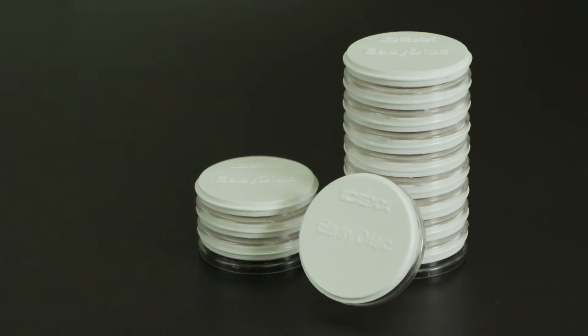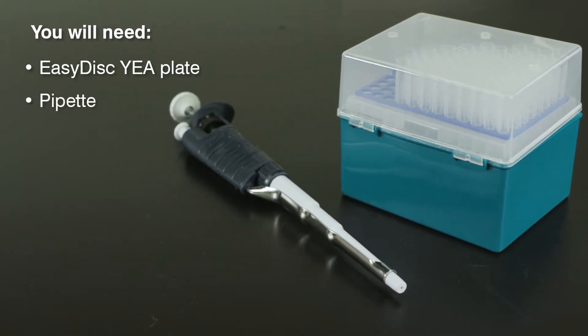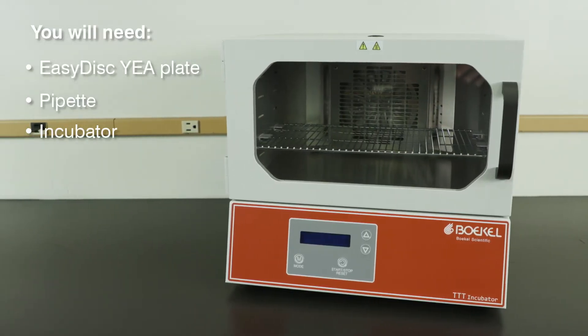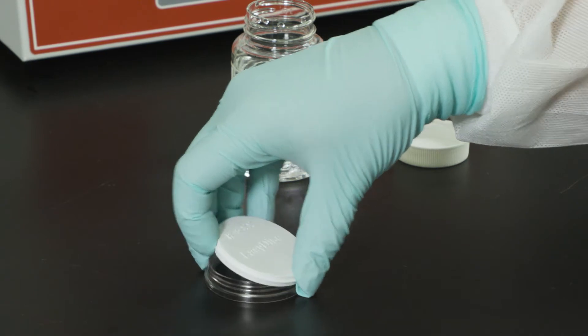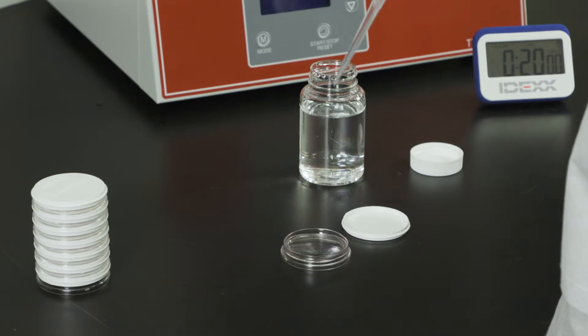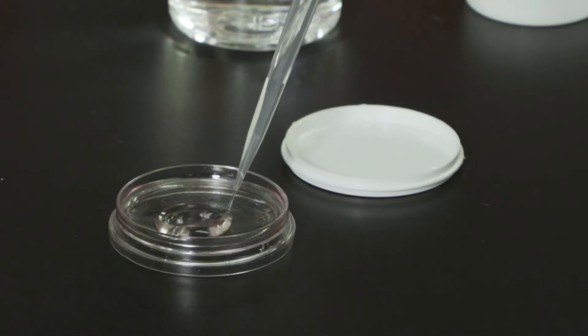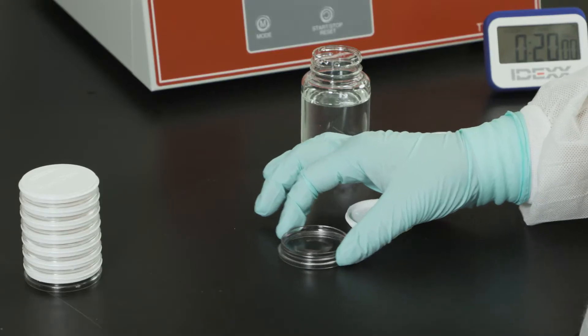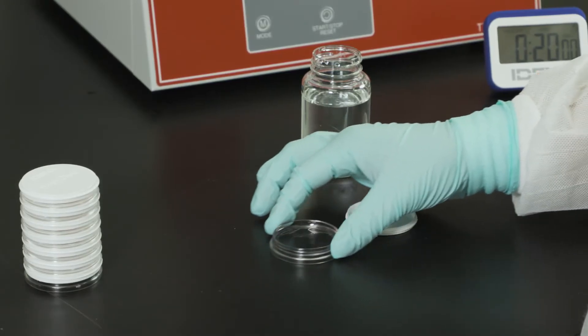For this demonstration, you will need an EZ-Disc YEA plate, a pipette, and a temperature-controlled incubator. Remove the lid and add 1 ml of water sample directly to the EZ-Disc YEA plate. Gently swirl to coat the entire plate and replace the lid.